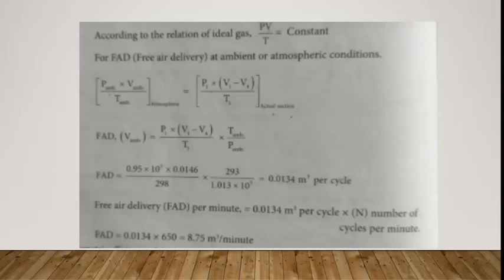The FAD per minute equals the FAD per cycle multiplied by N, where N is the speed in RPM. The FAD per second equals FAD per cycle multiplied by N/60.